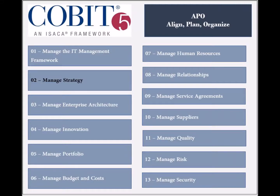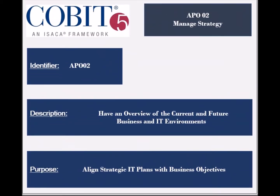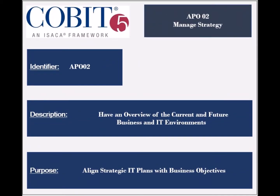The second process of the Align Plan and Organize Domain is called Manage Strategy. The identifier of this process is APO2. The process ensures that the current business and IT environments are analyzed, and the needed initiatives to reach the desired future state are identified. It also ensures that the enterprise architecture components, including the services and capabilities, are reliable and efficient in achieving the strategic objectives.